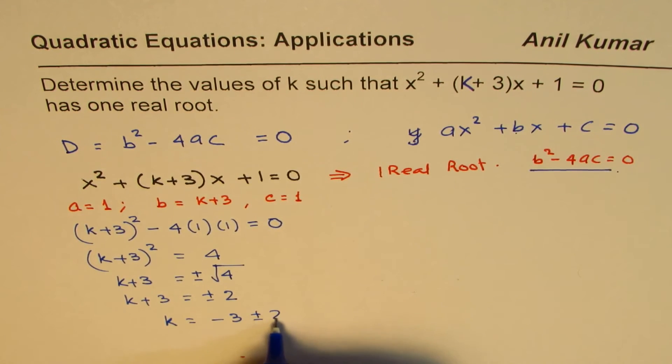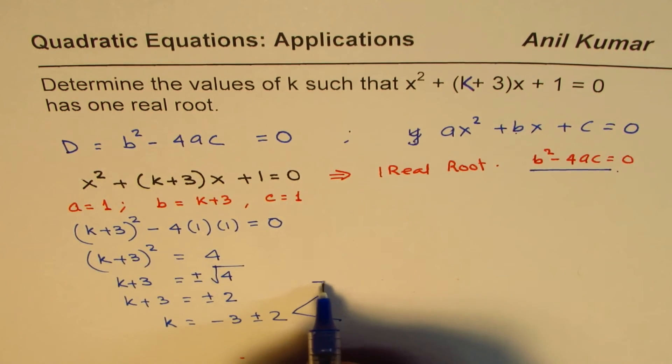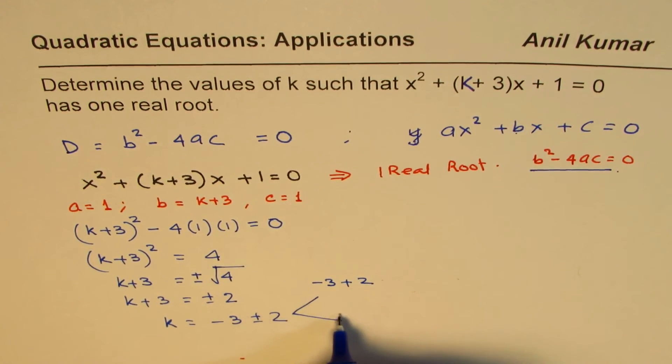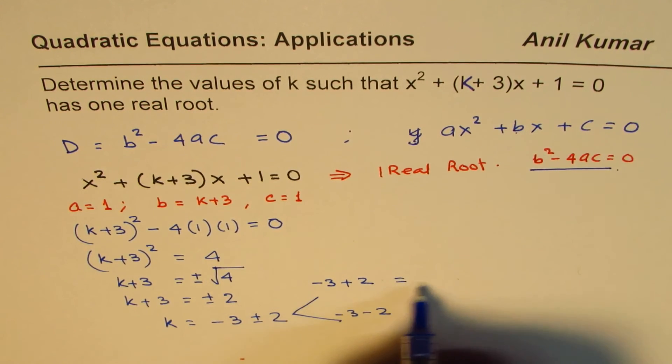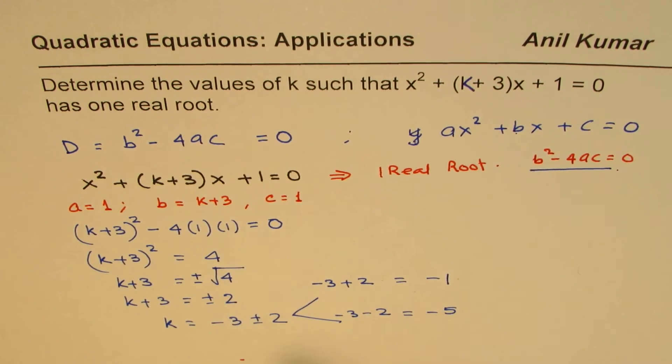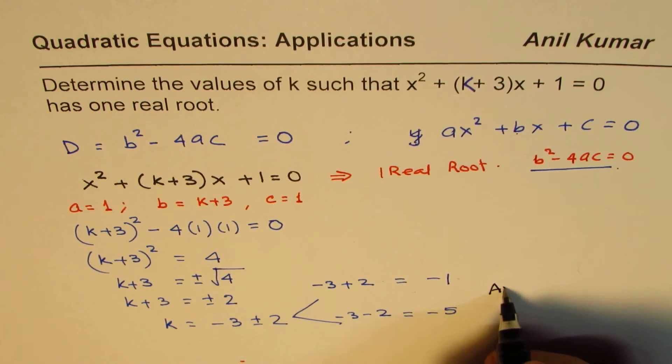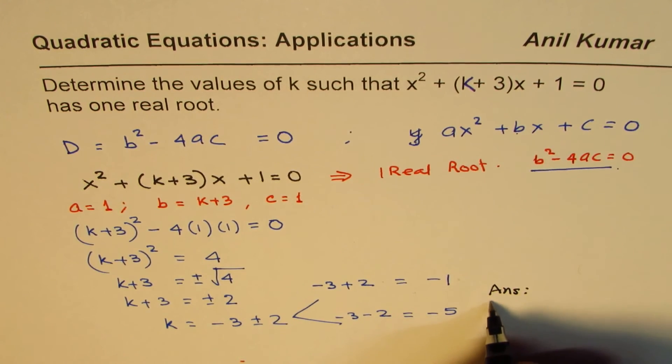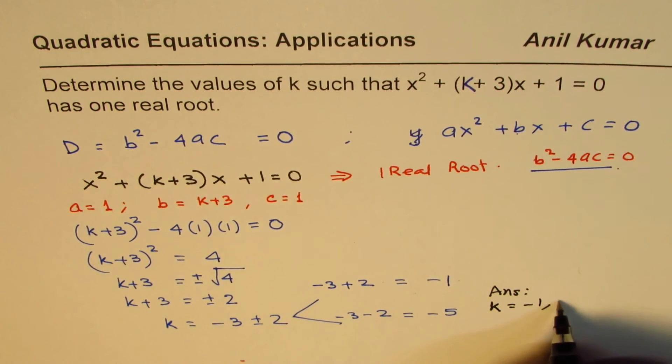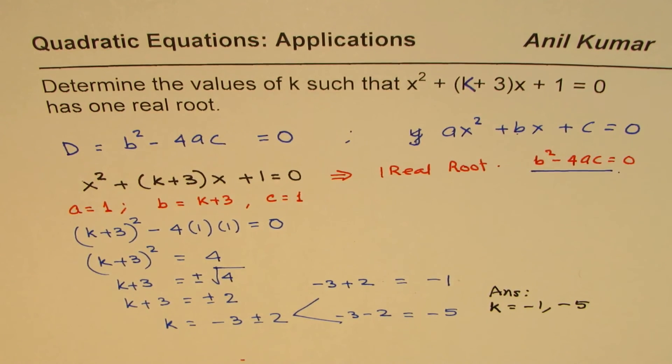So k = -3 ± 2. We get two values, and these values are -3 + 2 or -3 - 2. If you go with this value you get -1 as your answer, otherwise you get -5 as your answer. So we have two answers: k = -1 or k = -5.